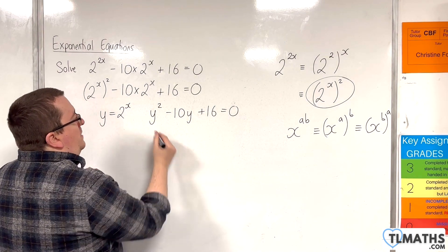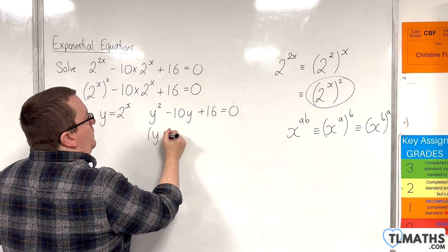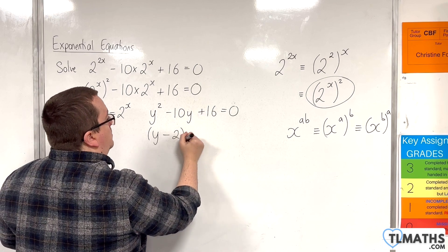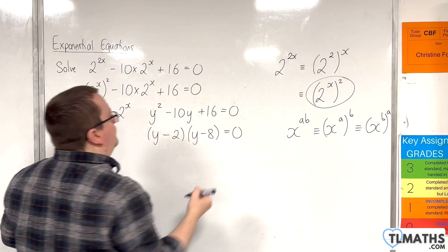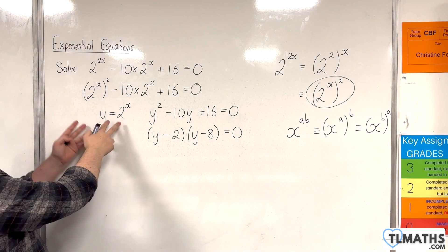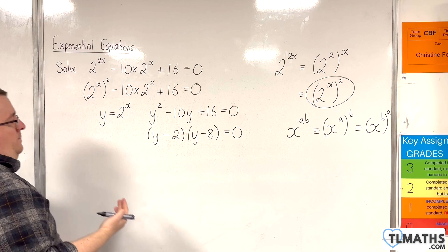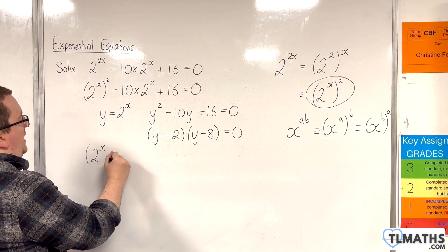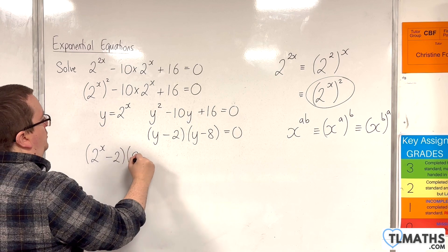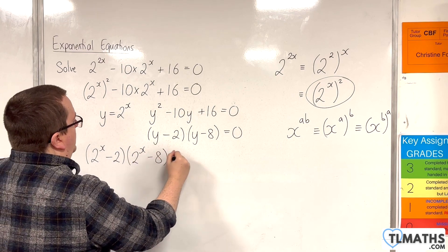That can then be factorized. So that would be y take away 2, y take away 8 equals 0. And then we can put the y equals 2 to the x back in. So we would have 2 to the x take away 2, 2 to the x take away 8 equals 0.